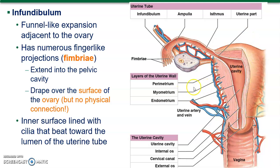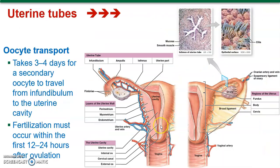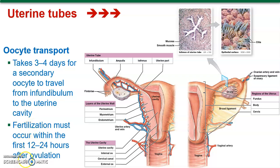Here's the whole uterus, and we'll go over these layers. The middle one is the myometrium — remember muscle. The endometrium we'll discuss with menses, and the perimetrium is the outer layer of the uterus. It takes about three to four days for the oocyte to travel through the infundibulum to the uterus — a lot of time to meet up with sperm. Within a couple of days you're most likely to fertilize the egg. If you're trying to have a child, people calculate what day and time based on mucus layers or body temperature. We'll also talk about the rhythm method if you're not trying to have a child.